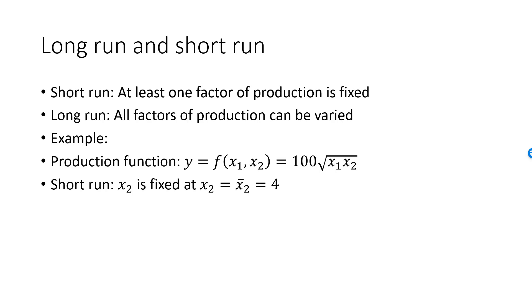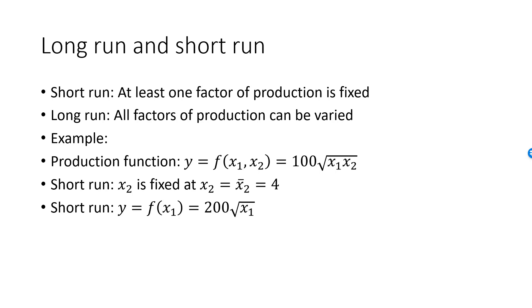If we substitute x2 equal to 4 into the production function, we get what is called the short run production function. y is now just a function of x1: y is equal to 200 times the square root of x1. In the short run, the firm only has one decision to make — how much to produce. Once they have decided on y, they must pick x1 such that 200 times the square root of x1 equals the desired level of production.